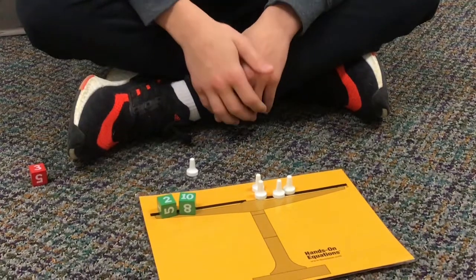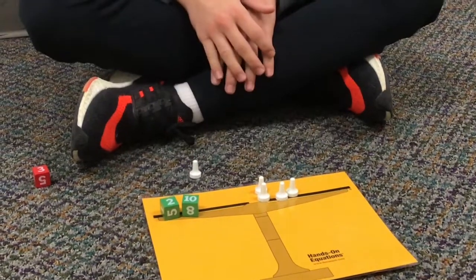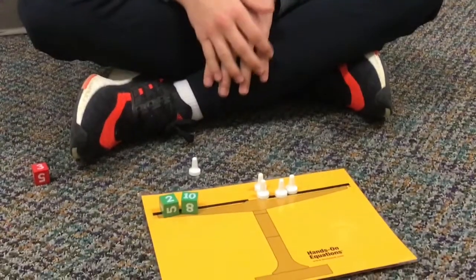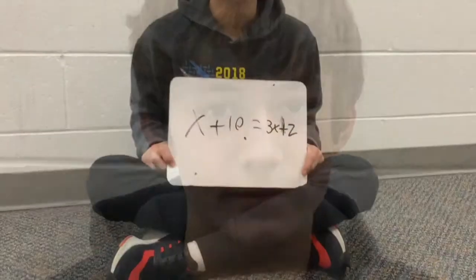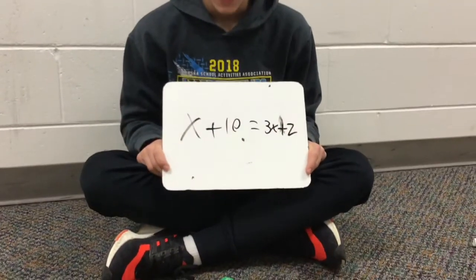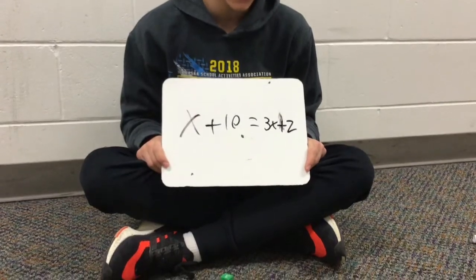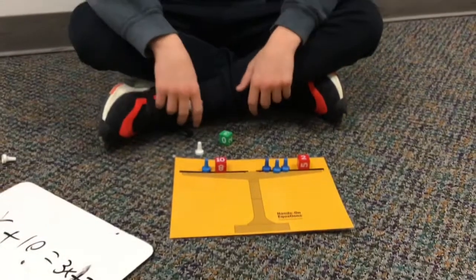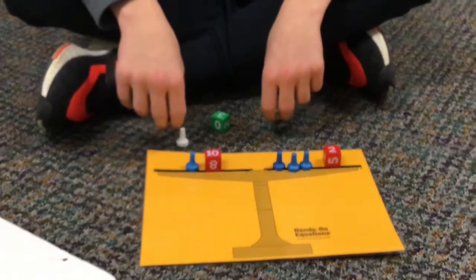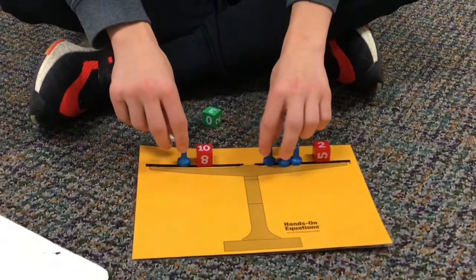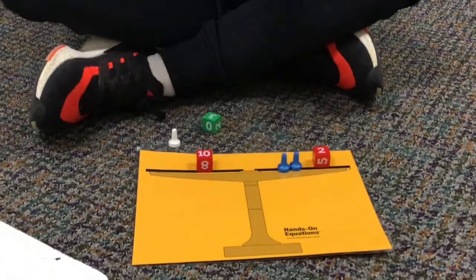And then that's your answer — you would have a negative 3 as the opposite of x. So my first problem is x plus 10 equals 3x plus 2. I already have it set up here. One of our legal moves is you can take something off of both sides, so I'm going to take 2 cubes.